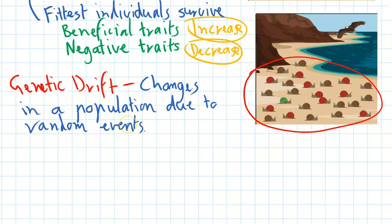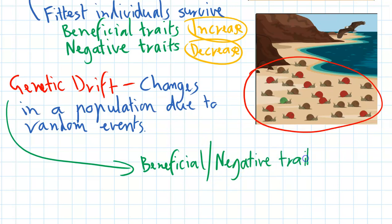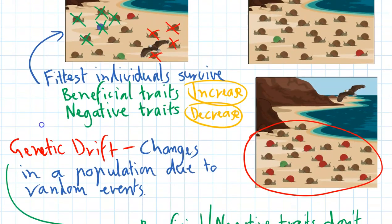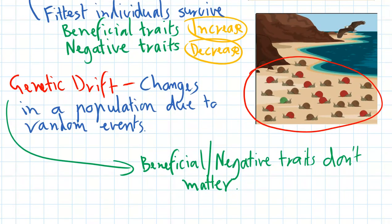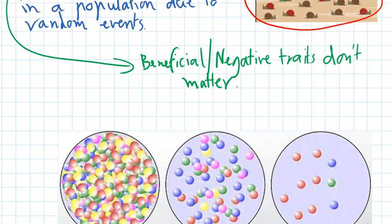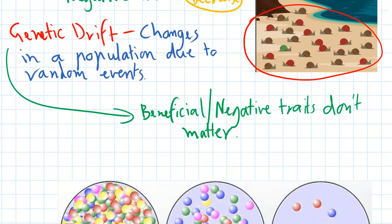The key here is that beneficial traits and negative traits don't matter in genetic drift. In this example, the colored snail shell is not going to protect you from a rock slide, and it's not going to protect you from a disease. That's true for a lot of other traits in the population. The other important thing to think about for genetic drift is it's all about percentages.